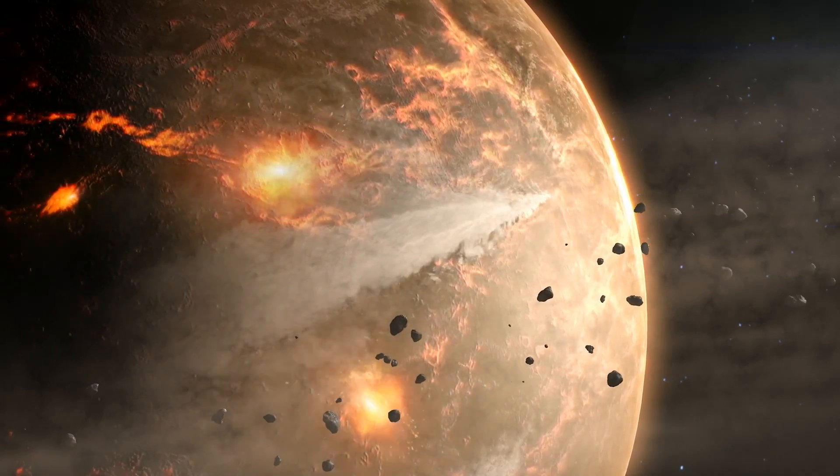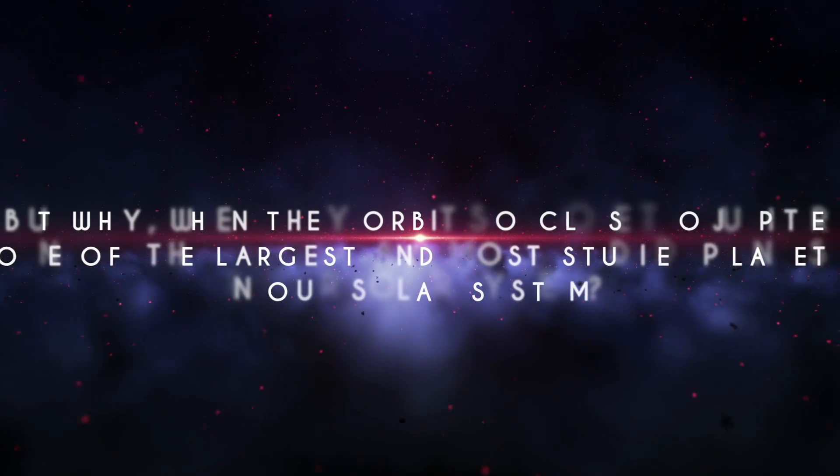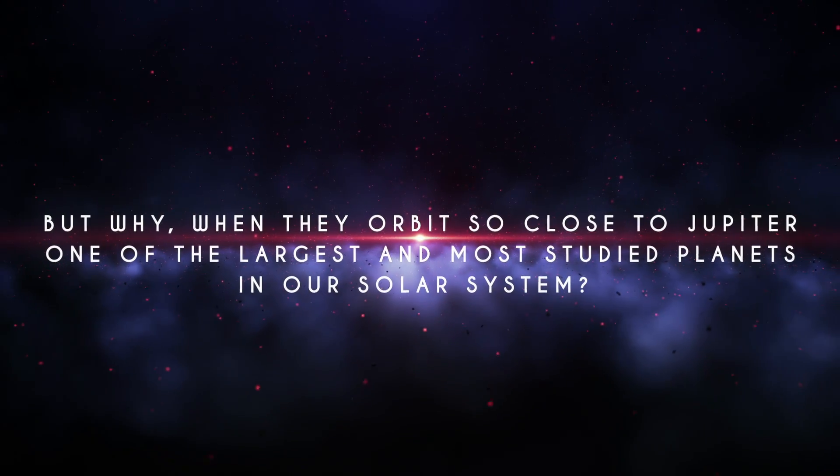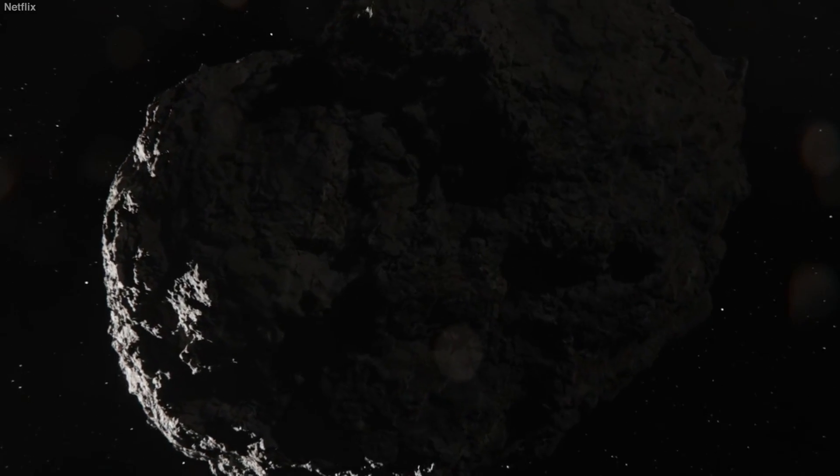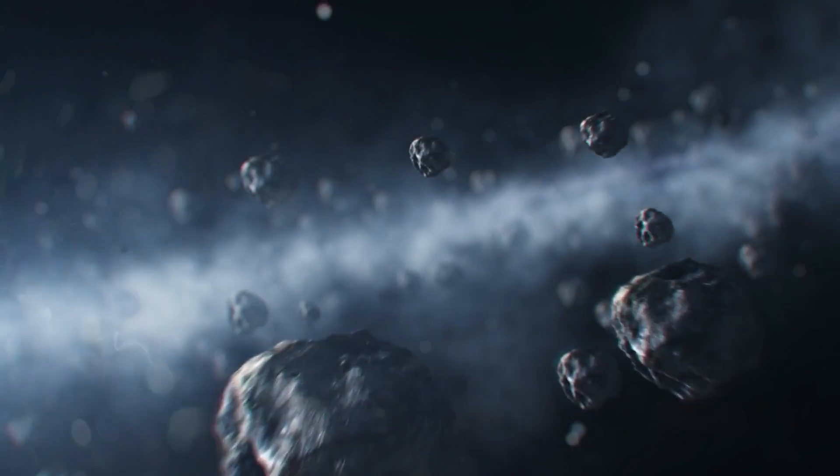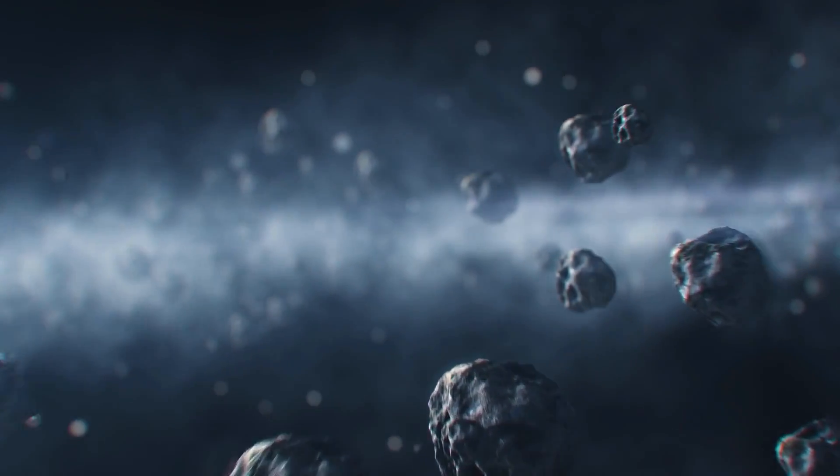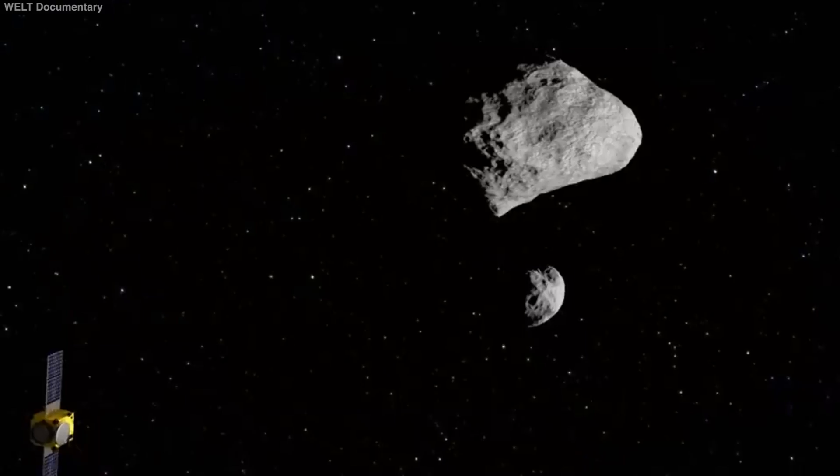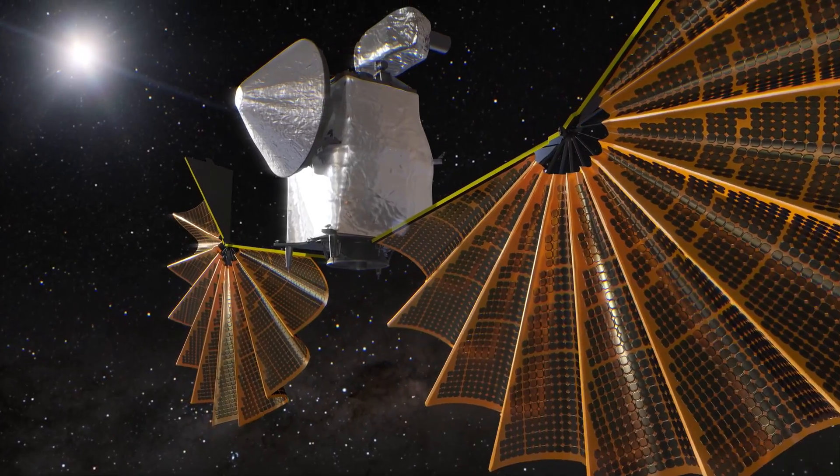In the depths of space, the Trojan asteroids have been lurking, almost entirely unexplored. But why, when they orbit so close to Jupiter, one of the largest and most studied planets in our solar system? Perhaps it's because these space rocks have been shrouded in mystery since they were first hypothesized back in 1906. Since then, scientists have spotted almost 4,600 asteroids that fit the bill, but it's likely that many more remain undiscovered. These asteroids hold the secrets of our solar system's earliest days, acting like a time capsule that scientists are dying to unlock. And that's where Lucy comes in.